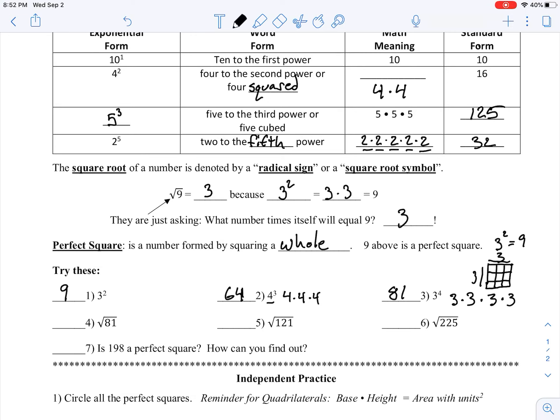Alright, so for number 4 here it's asking us to take the square root of 81. So it's asking us what number can I multiply by itself to get to 81? Well, if we think of 9 times 9, well that's going to give us 81, right? I took 9 and I multiplied it times itself to get 81. So the square root of 81 is 9.